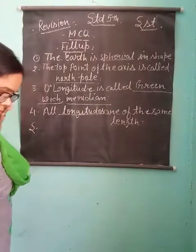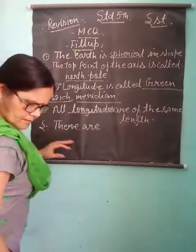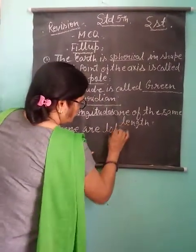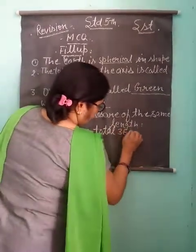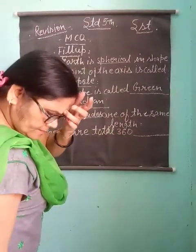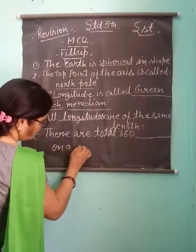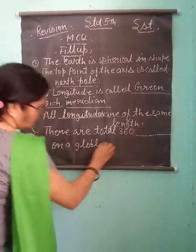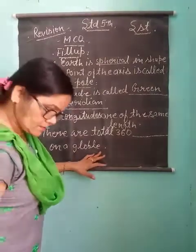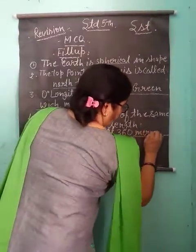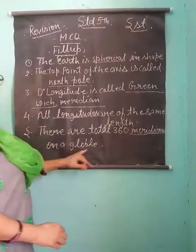Number five: there are a total of three hundred sixty meridians on a globe.